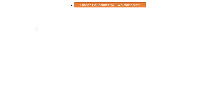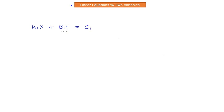A general form of linear equation can be written something like this: a1x plus b1y is equal to c1, where a1, b1, and c1 are all constants and x and y are variables. That is a very general form of a linear equation.